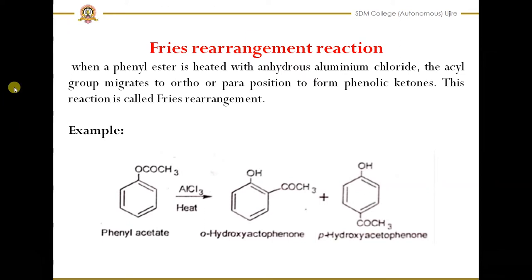The example I have taken is phenyl acetate, which is the ester. In this reaction, in the presence of anhydrous aluminum chloride at higher temperature, the acyl group migrates to either the ortho or para positions, giving a mixture of products — the phenolic ketones. When phenyl acetate is treated with anhydrous aluminum chloride at higher temperature, we get ortho-hydroxyacetophenone and para-hydroxyacetophenone.